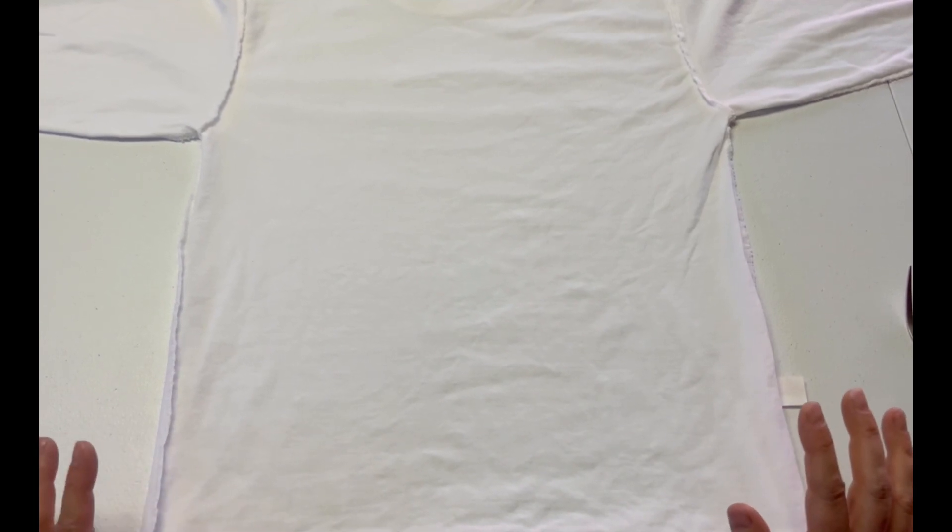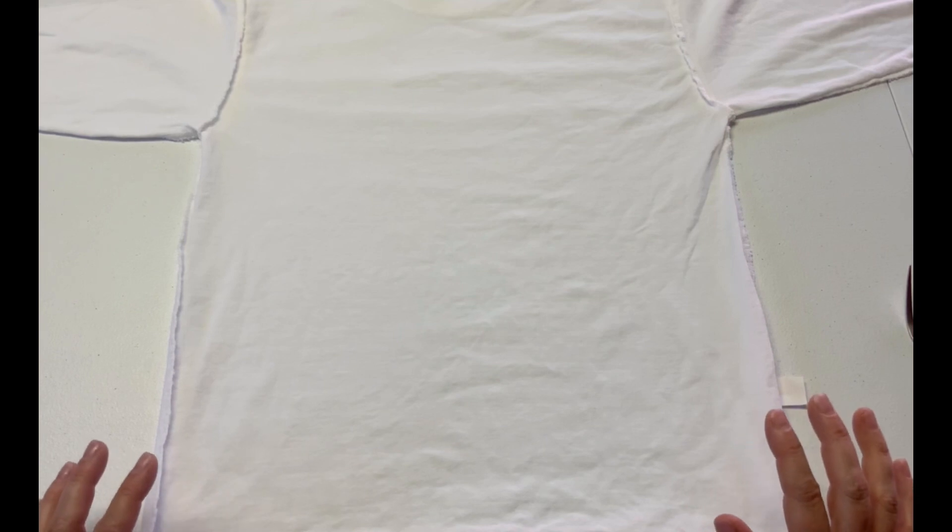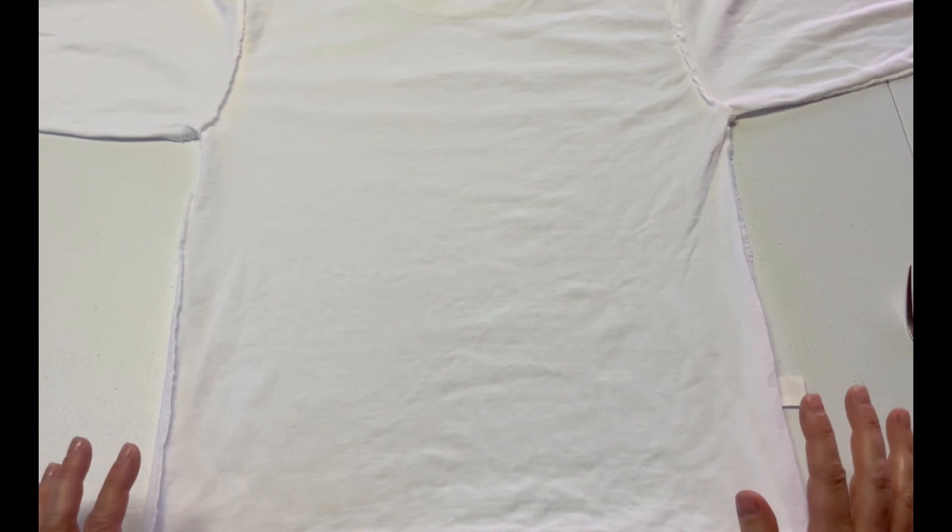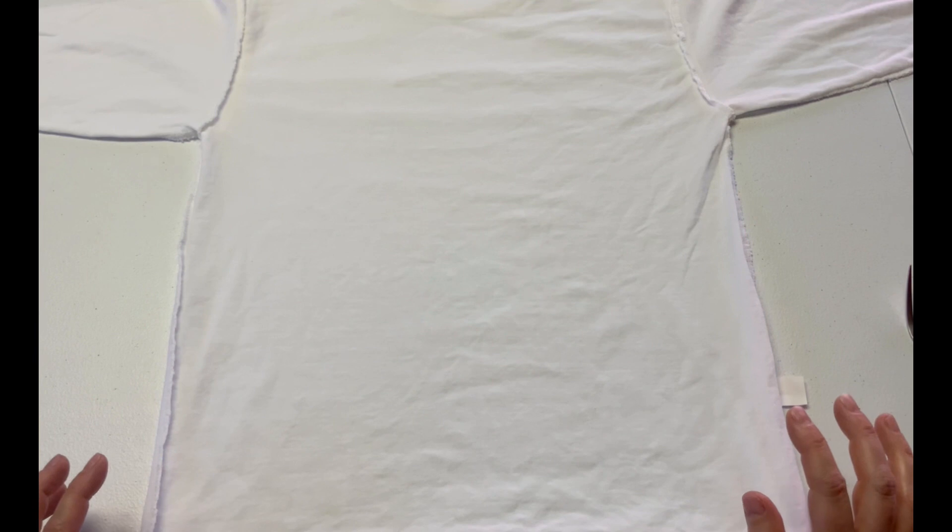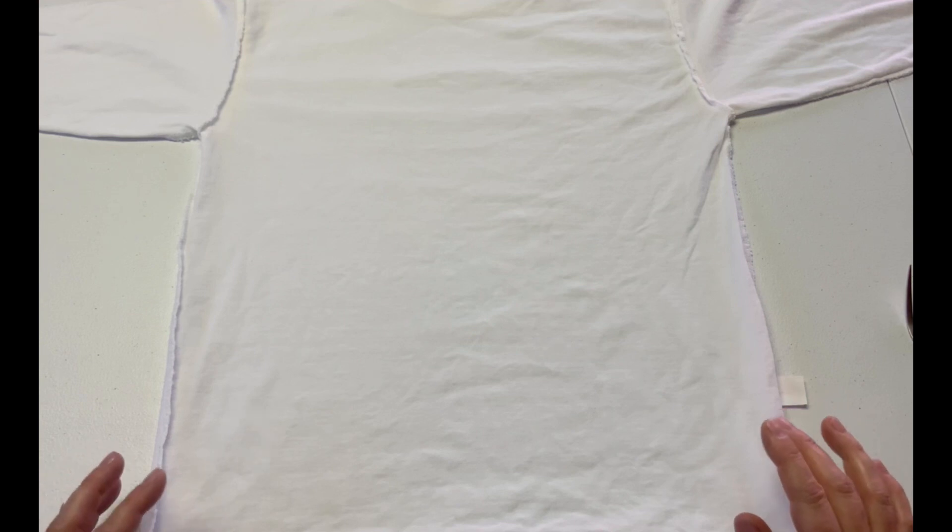And now we're going to tie it up for tie-dye. What we're going to make today is just the basic spiral. This is a really great shirt for beginners - it's pretty quick and easy to learn. So I highly recommend starting here, and once you feel comfortable with this, it gets a lot easier to make different patterns.